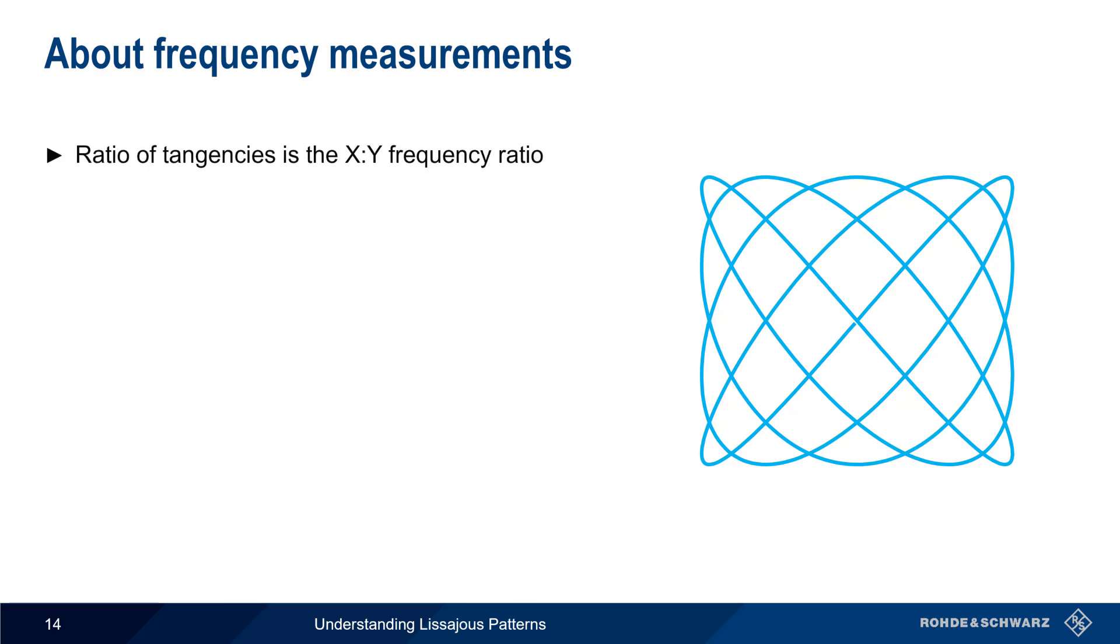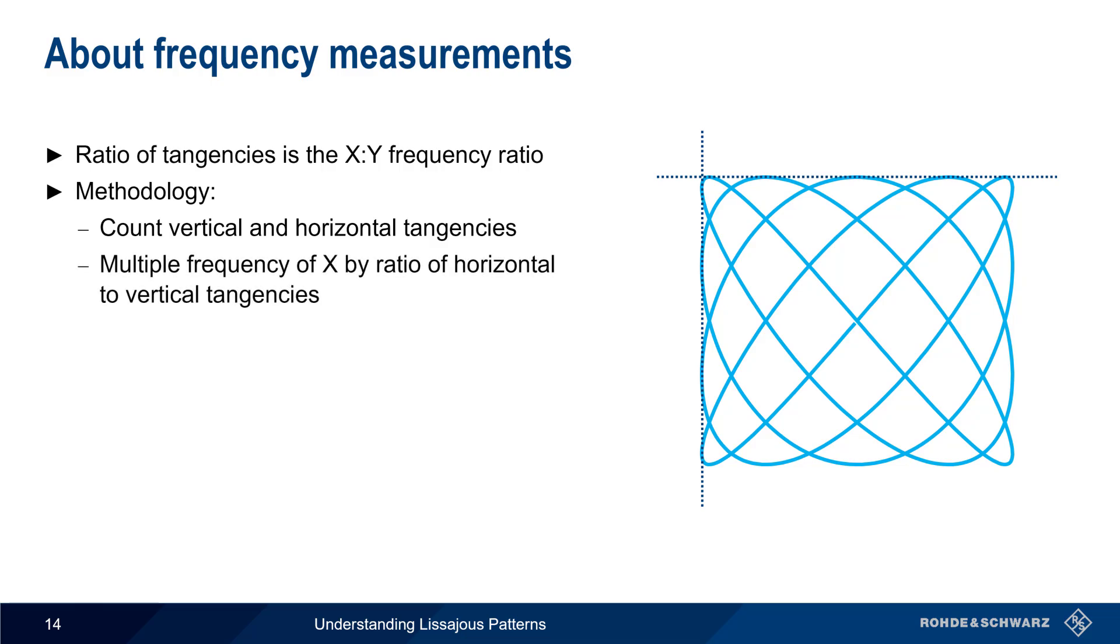We saw earlier how counting the tangencies in a Lissajous pattern can be used to determine the frequency ratio between X and Y. Therefore, we can measure relative frequencies using the following methodology. First, we count the number of vertical and horizontal tangencies.